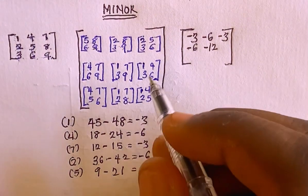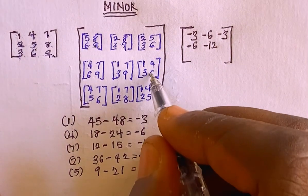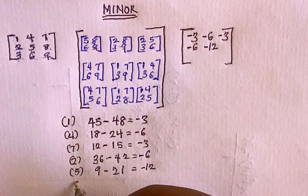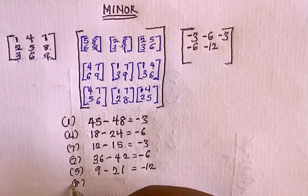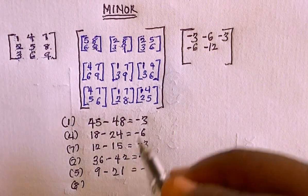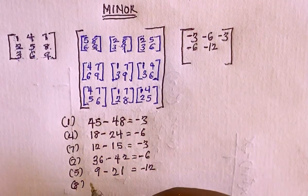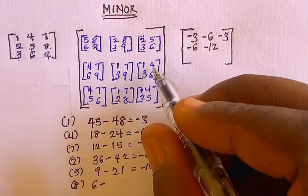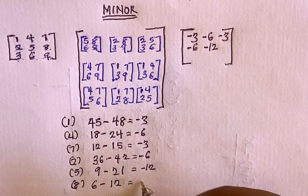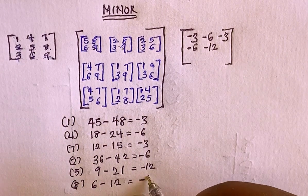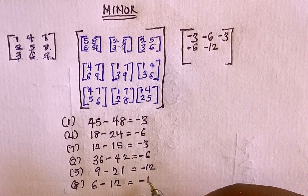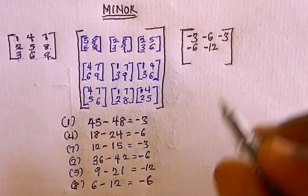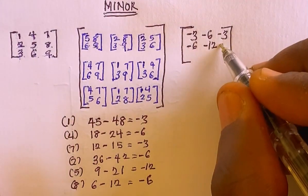For element 8, the sub-matrix is 1, 3, 4, 6, so 6 multiply by 1 is 6, minus 3 multiply by 4 is 12, giving minus 6.